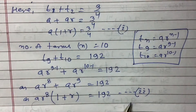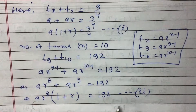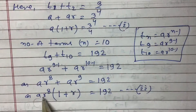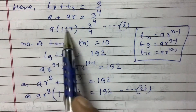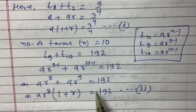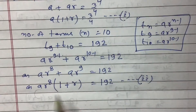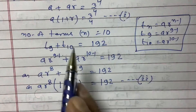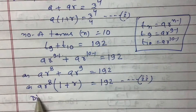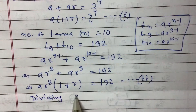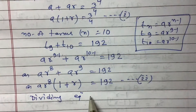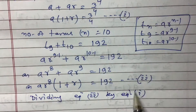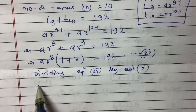To solve these two equations, since a and r appear in product form, we divide rather than subtract. Since Equation 2 has the greater power, we divide Equation 2 by Equation 1 — that will be easier.